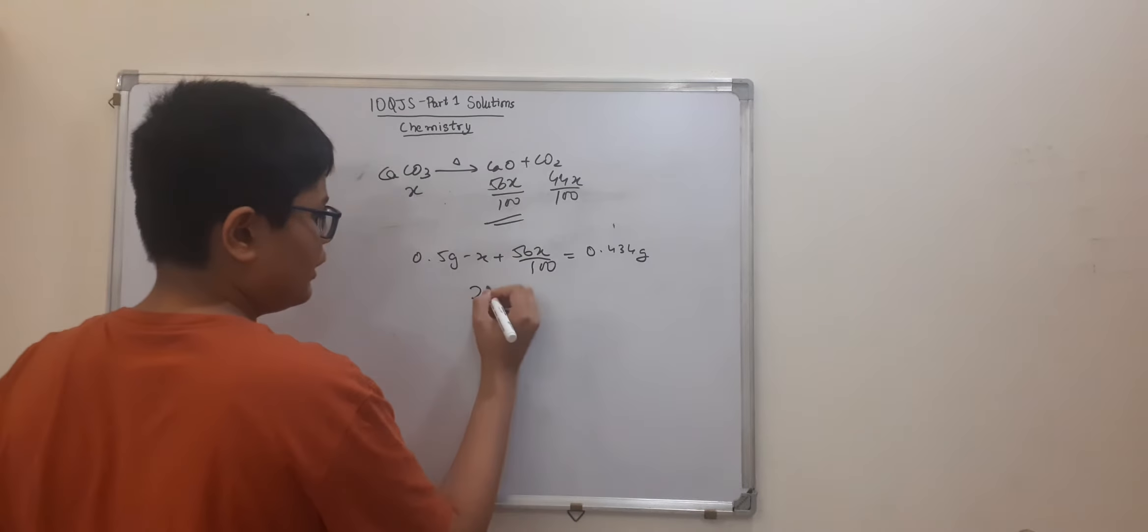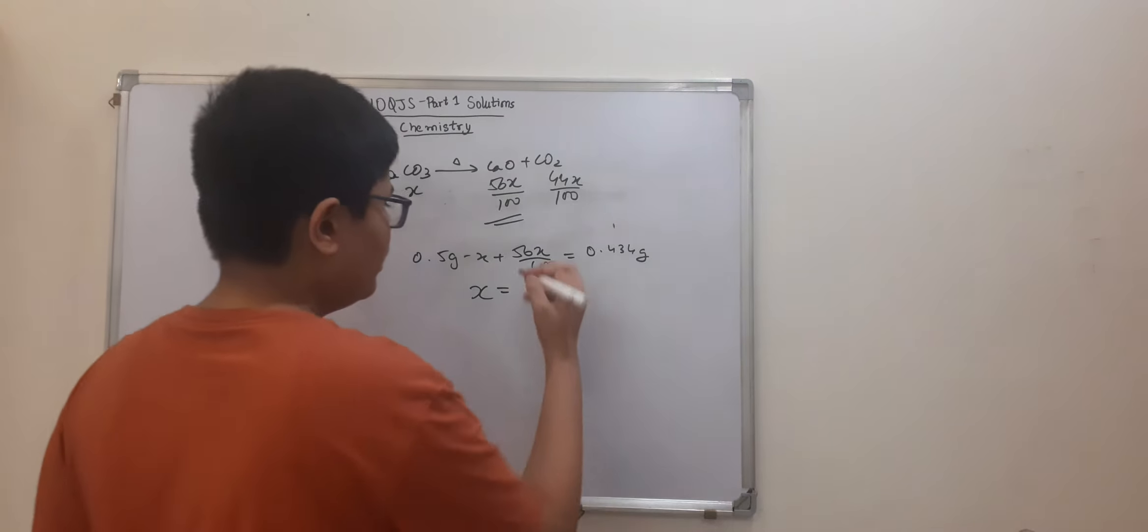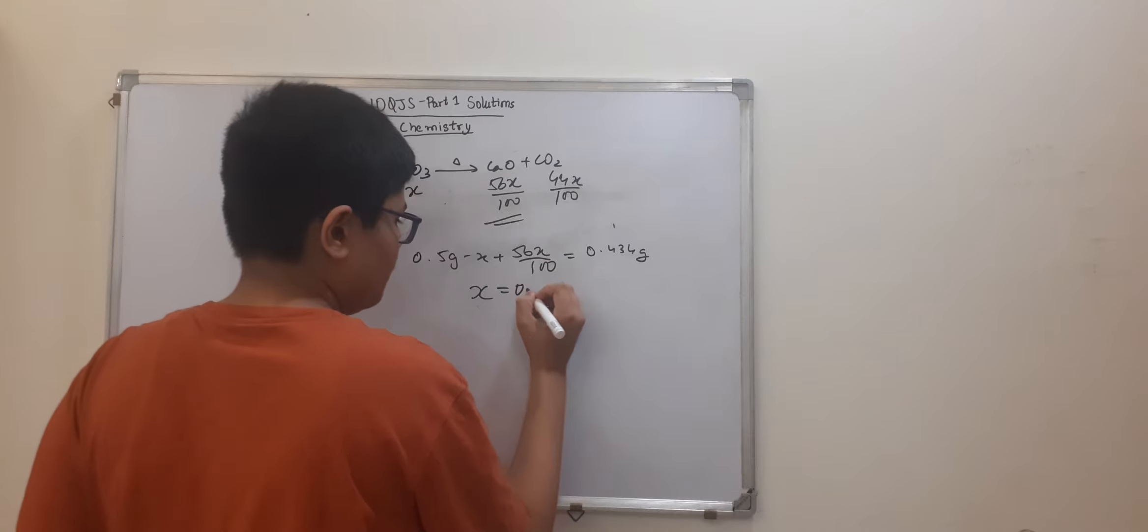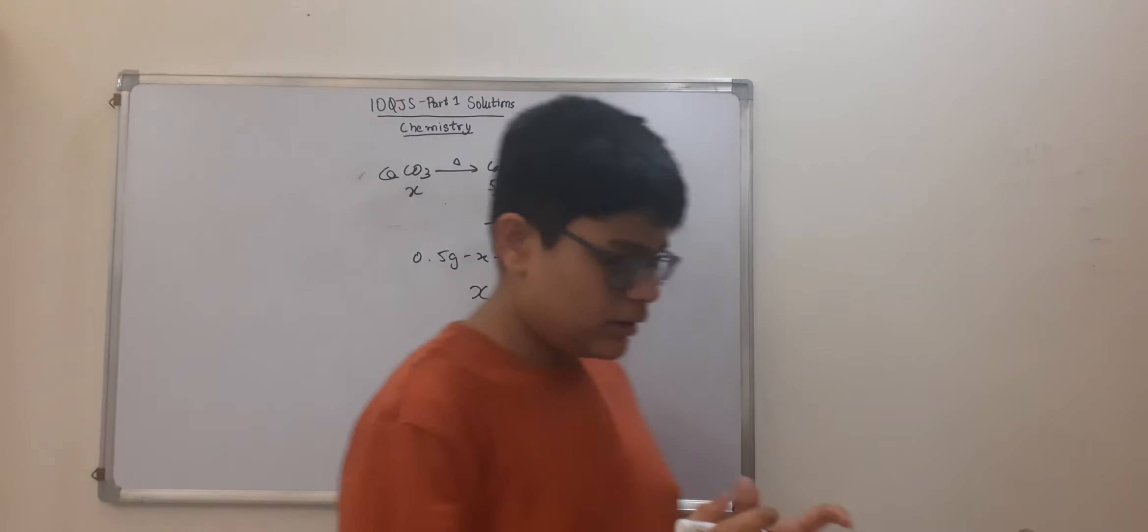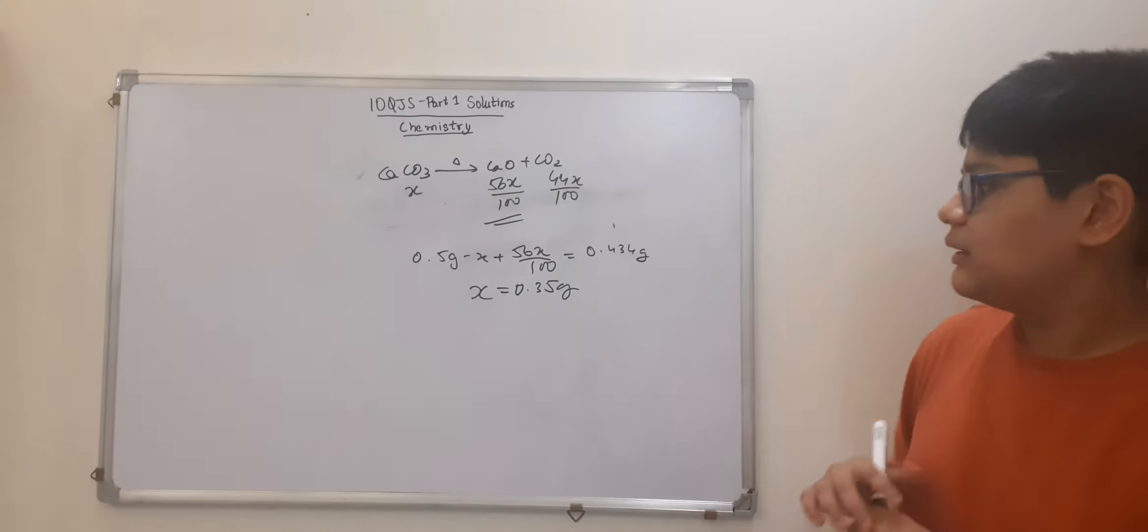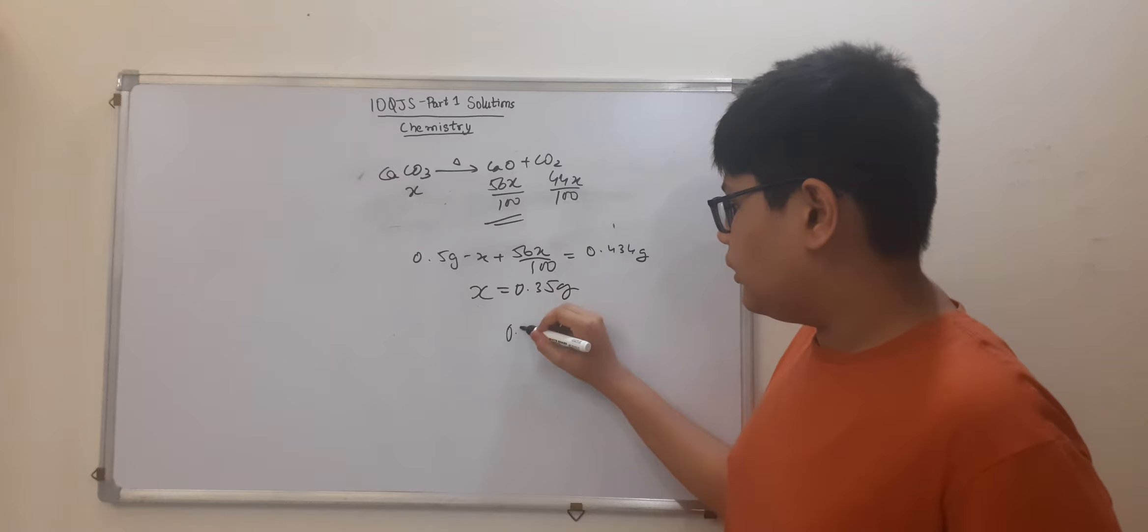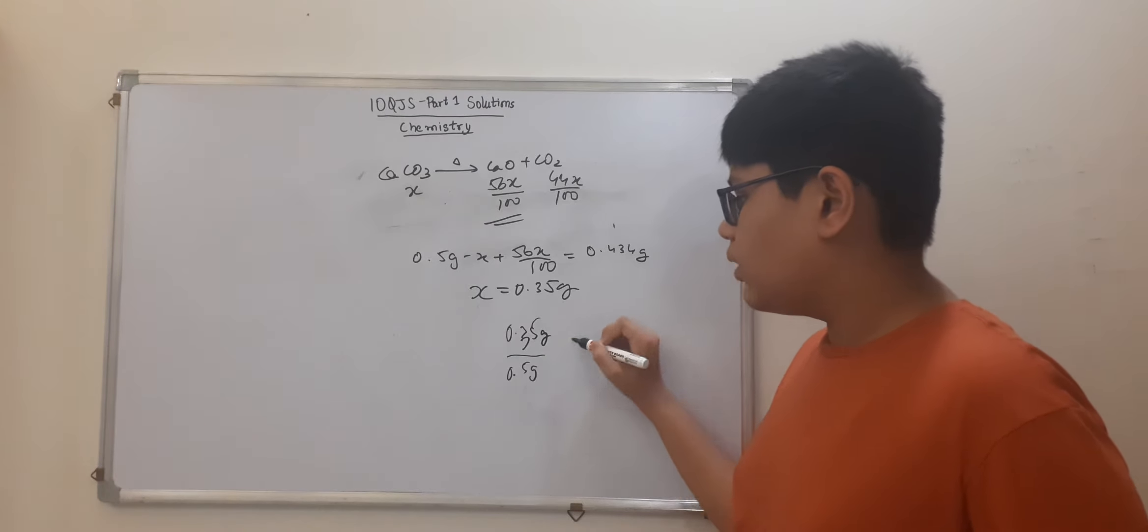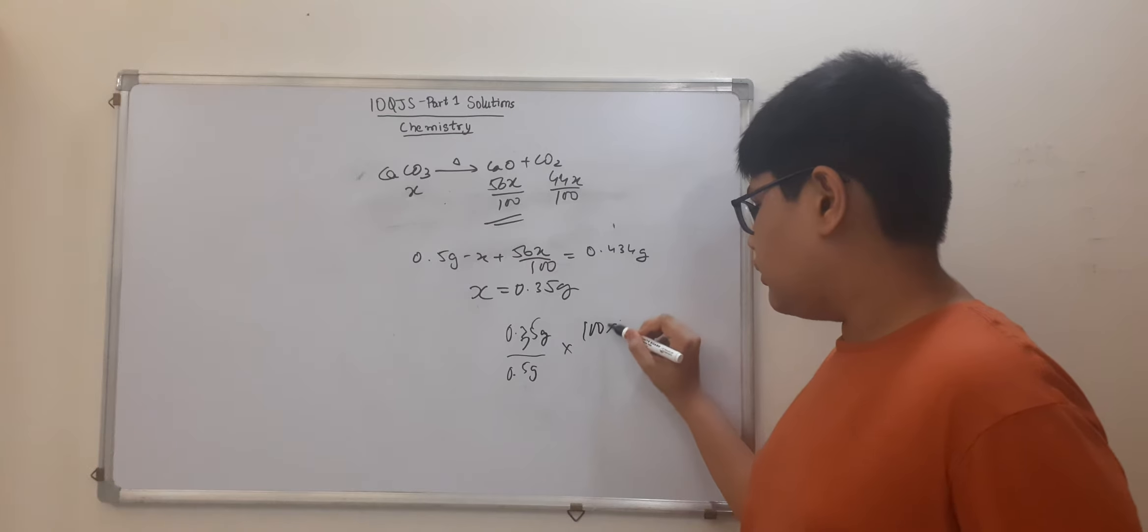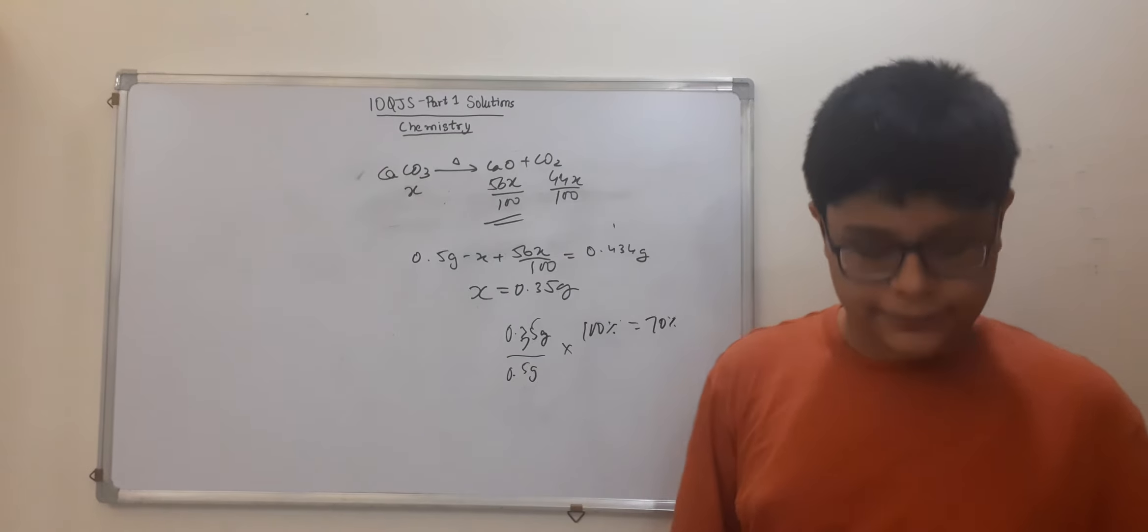Because in the total mixture we will only have CaO in the final mixture. So if you solve this, then you will directly get X is equals to 0.35 gram. And this if you divide 0.35 gram divided by the total mass of the initial mixture that is 0.5 gram into 100% gives us 70% which is option A. So option A will be the correct answer.